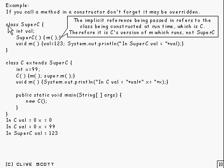What we've got here is just an ordinary class SuperC with a value in it and a constructor. The constructor calls this method M, and M sets the value to 123 and prints out 'In SuperC val=' and the value, which will be 123.